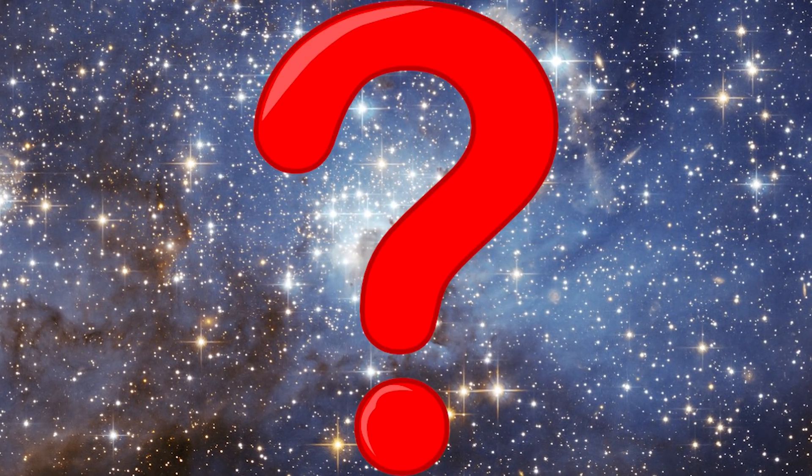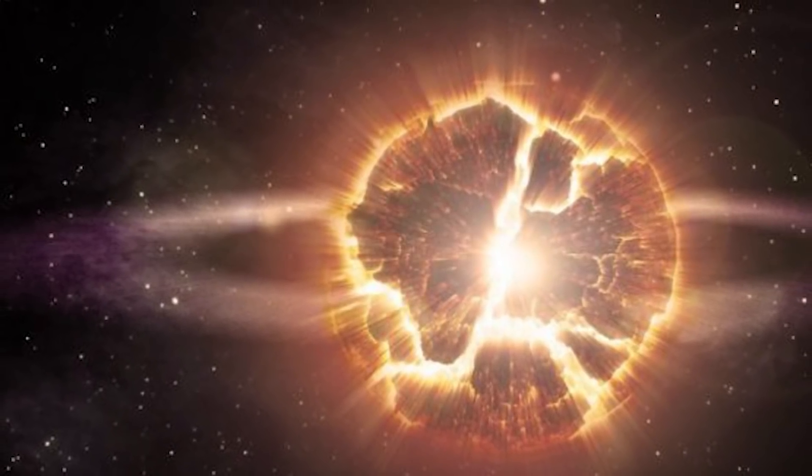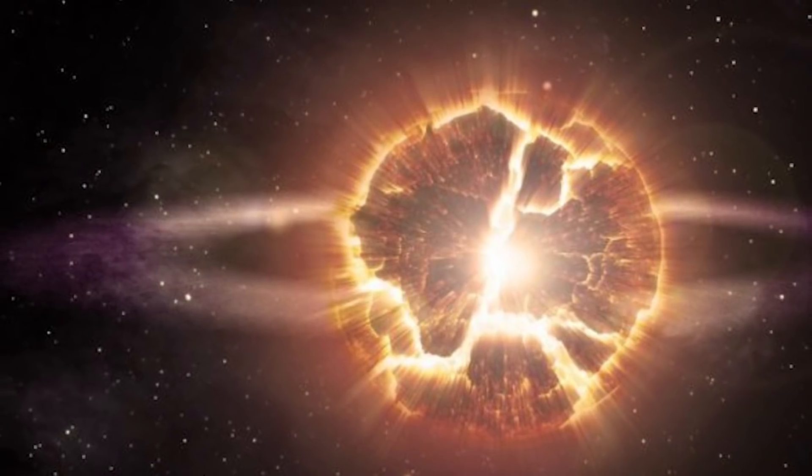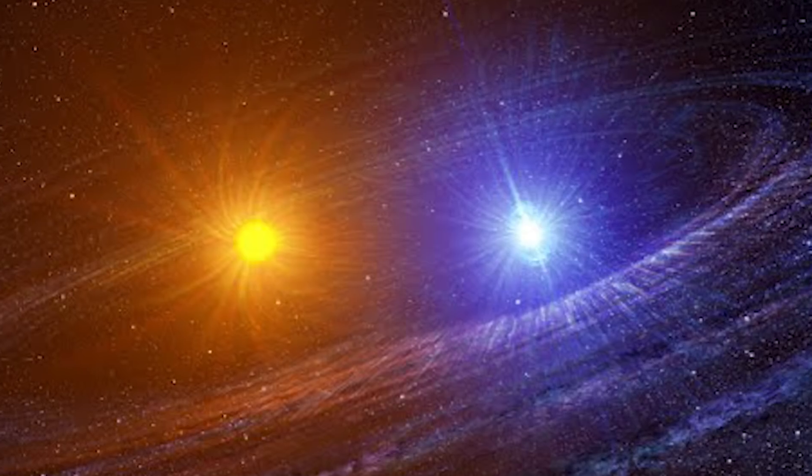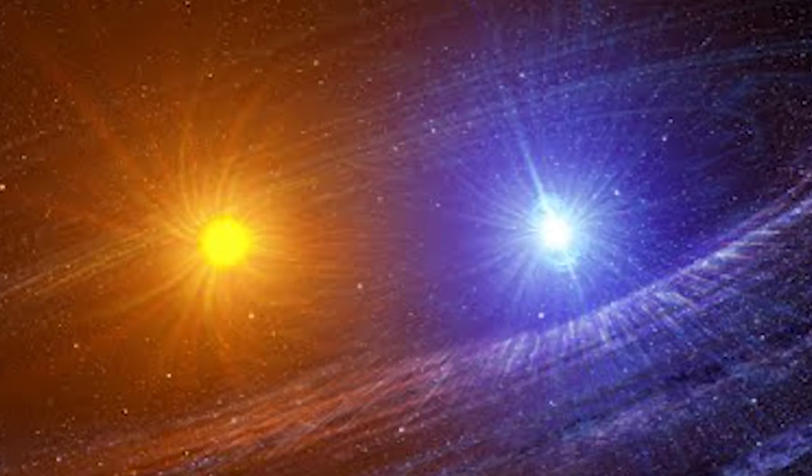So what causes a supernova? There are two ways in which a supernova can happen. The first has to do with binary star systems. Binary star systems consist of two stars that orbit around the same point. One of the stars in this orbit is a white dwarf, and it literally sucks the life out of the other star.